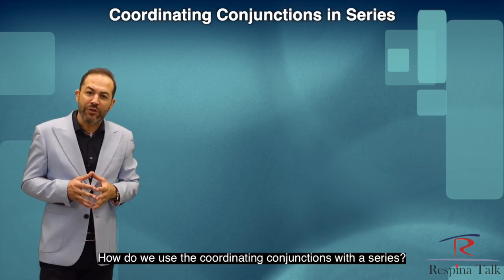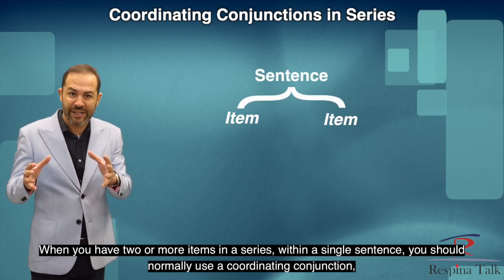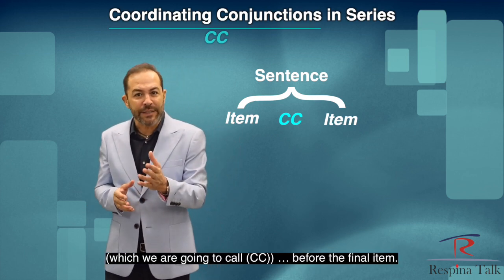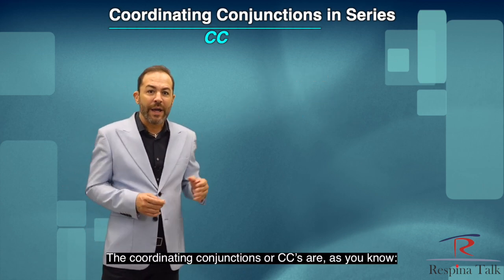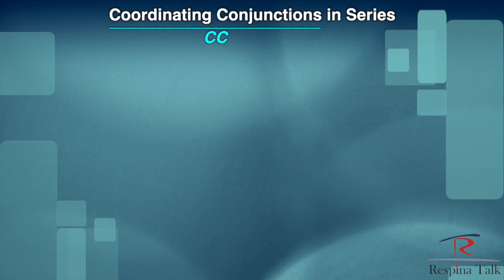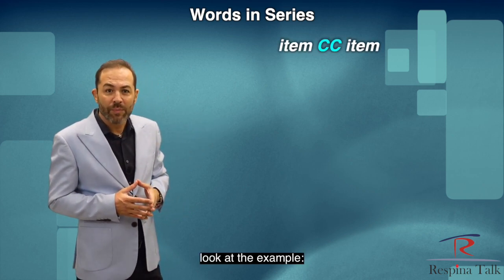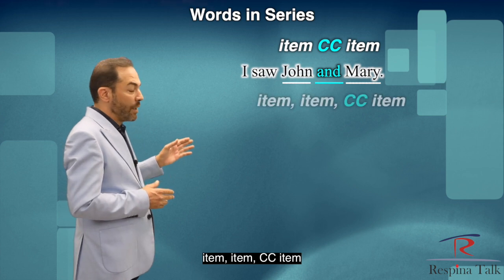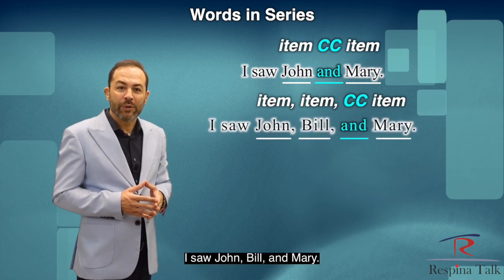When you have two or more items in a series within a single sentence, you should normally use a coordinating conjunction — CC — before the final item. The coordinating conjunctions are: and, but, nor, for, so, or, yet. A two-item series looks like: item CC item — for example, "I saw John and Mary." A three-item series looks like: item, item, CC item — for example, "I saw John, Bill, and Mary." For phrases: "I see him going to work and coming home" — both are ING phrases, so they are parallel. "I plan to eat in a restaurant and to see a movie" — two TO phrases connected with AND.